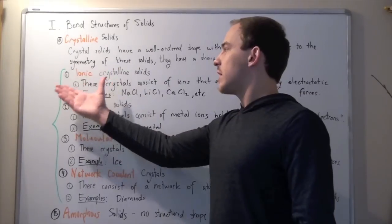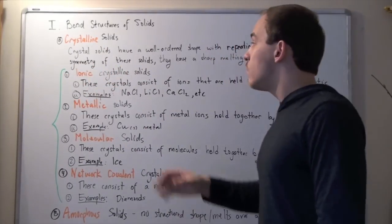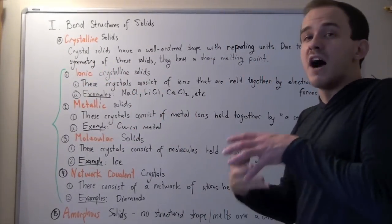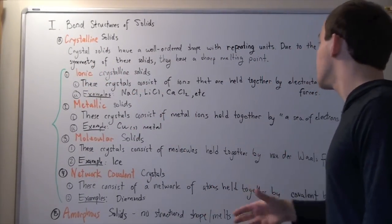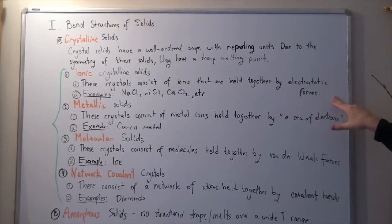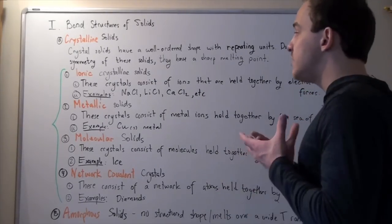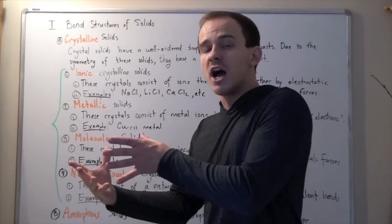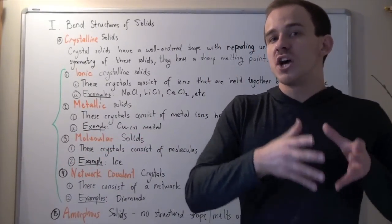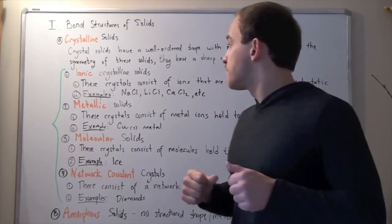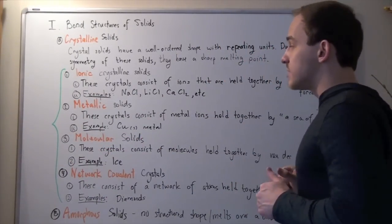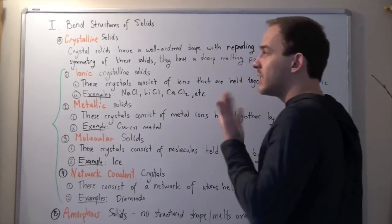Let's begin with ionic crystals. These crystals consist of ions held together by electrostatic forces—forces between positively charged ions and negatively charged ions of different atoms. Let's see some examples. Sodium chloride is an ionic crystal.